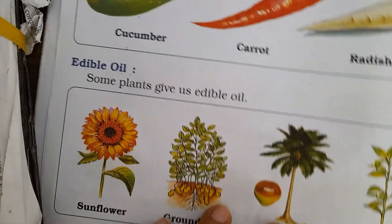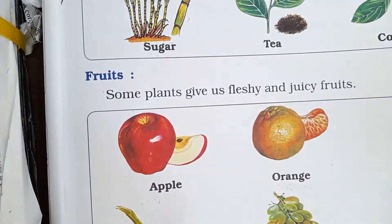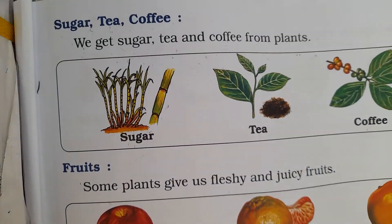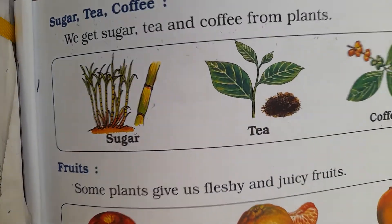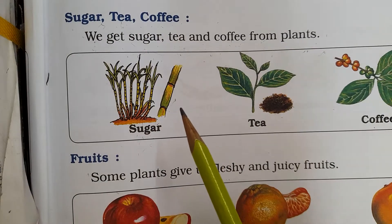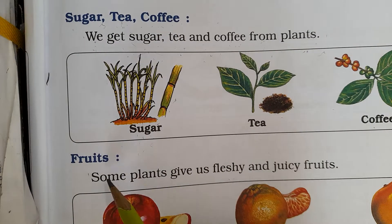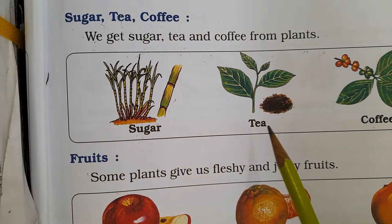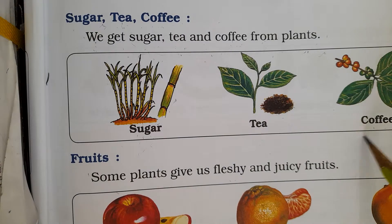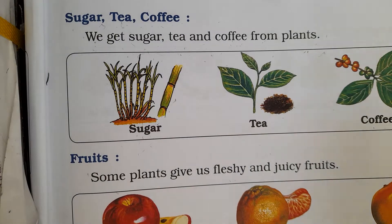Students, we get sugar, tea, and coffee — where do we get them? From plants. We get sugar from sugarcane, tea from the tea plant, and coffee from the coffee plant.